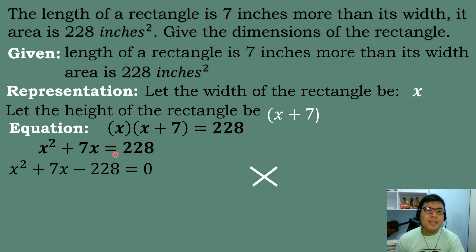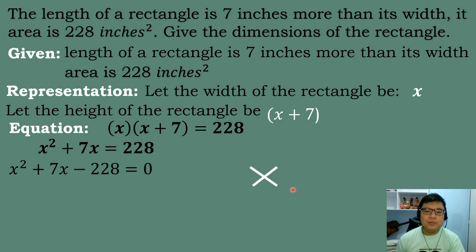We can use any methods we have discussed, such as completing the square, factoring, or the quadratic formula — any method applicable to this quadratic equation. Let's use the factoring method using the crisscross method. We will get the factor of the numerical coefficient of the quadratic term, which is 1. The factor of 1 is 1 times 1.